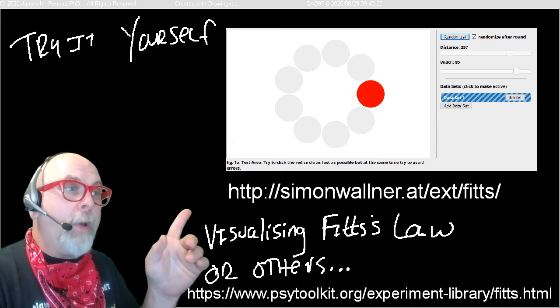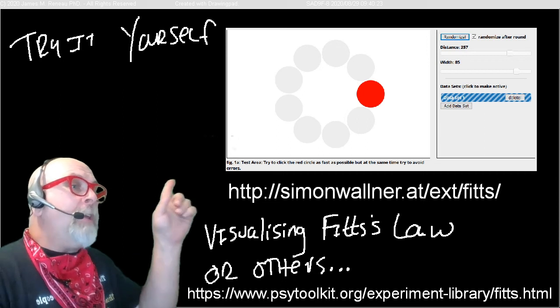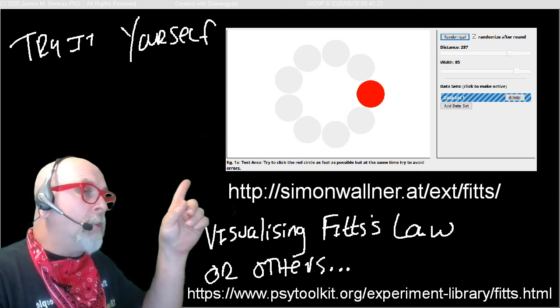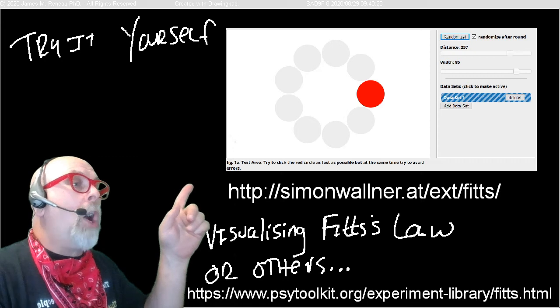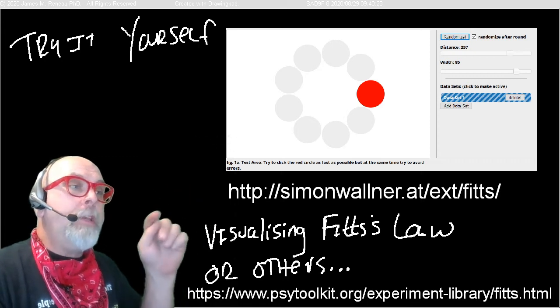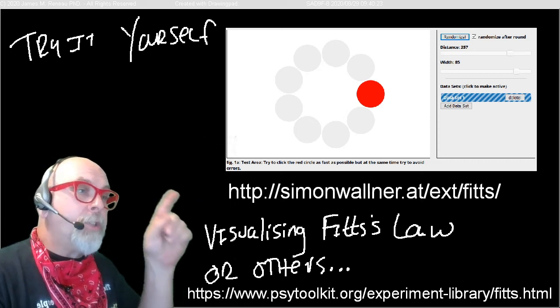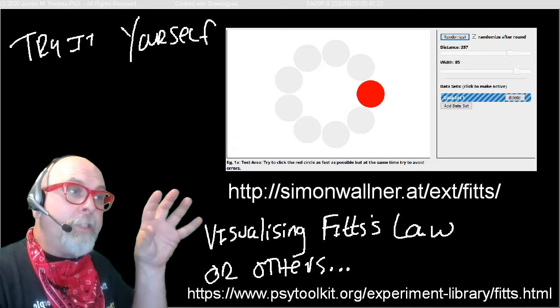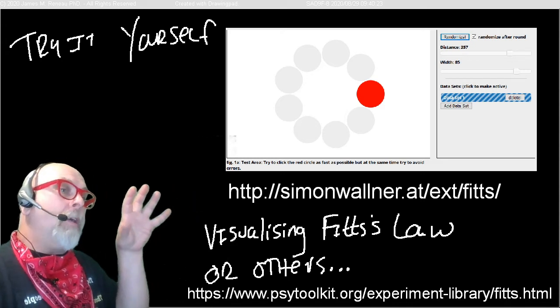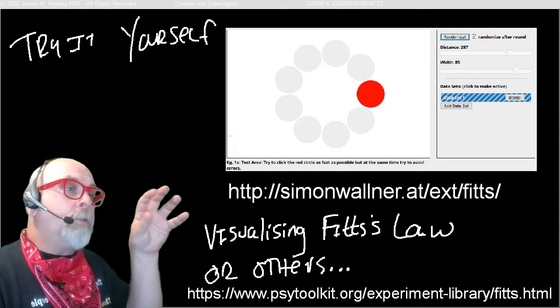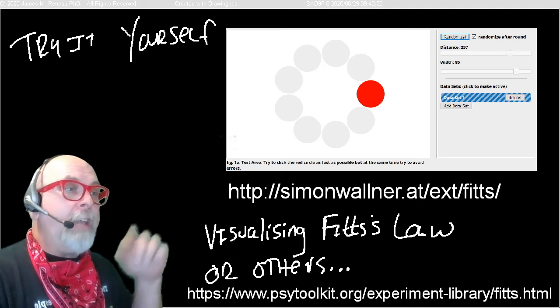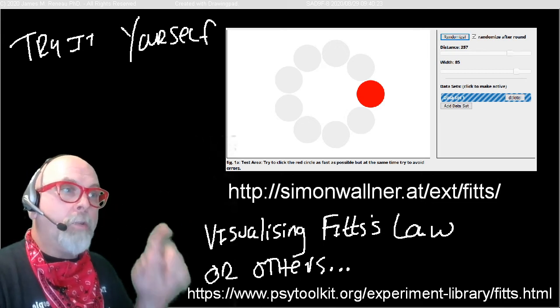Fire it up and you'll get a program screen that looks something like this. And you start. And basically what you're going to be doing is you'll be clicking circles that appear in this circle. And the circle will be bigger or smaller. And the targets will be bigger and smaller. And you've got to click like 20 targets as quick as you can.